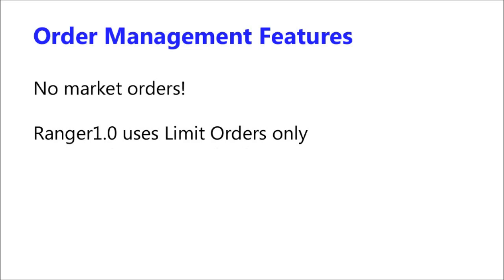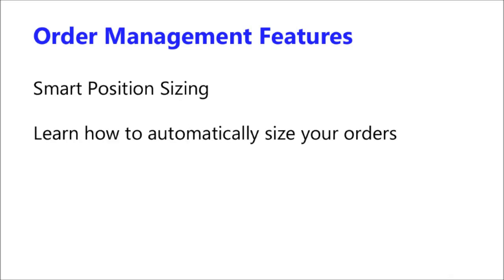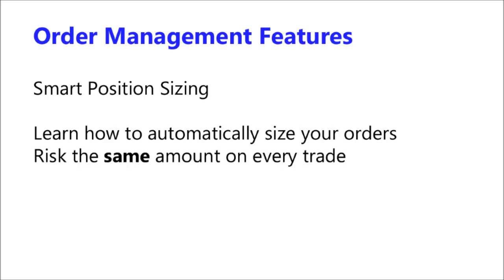The system is designed not to use market orders. With limit orders, you define the minimum price you want, and if you don't get that price the trade simply won't occur. When managing stop-out orders, the system updates any unfilled limit orders at set time intervals until filled. For partial fills — for example if only half your buy order fills and the price then reaches your target — the partial order is cancelled and an exit order to take profits is submitted. You'll also learn about smart position sizing, which automatically sizes orders so you risk the same amount on every trade based on your range width.